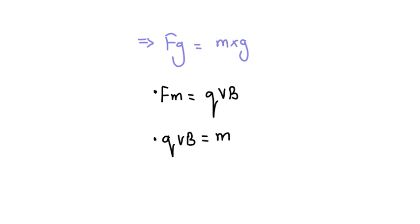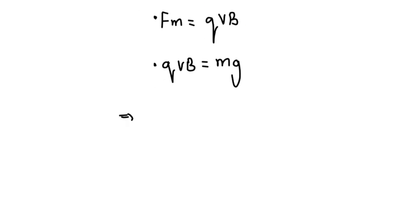Now we want the magnetic force to balance the gravitational force, so qvb equals mg. Substituting the values, that is 1.6 into 10 raised to the power minus 19 coulomb